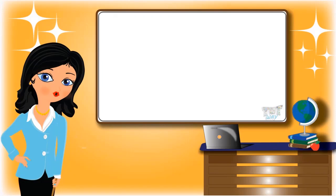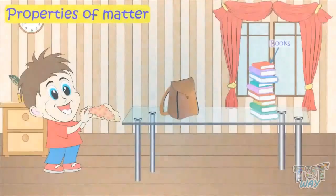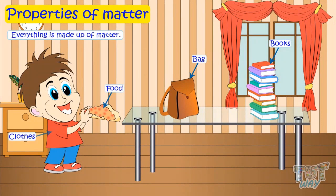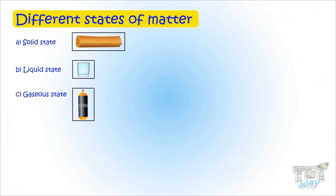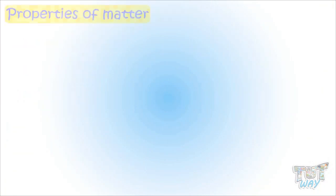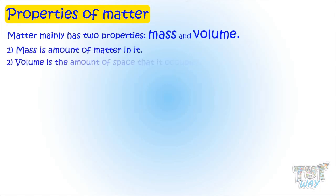Hi kids, today we will learn about properties of different states of matter. Everything around us is made up of one or the other form of matter. Different forms of matter are solid, liquid, and gaseous. Matter mainly has two properties: mass and volume. Mass is the amount of matter in it, and volume is the amount of space that it occupies.